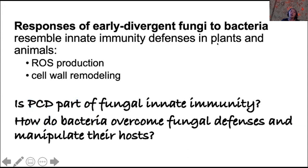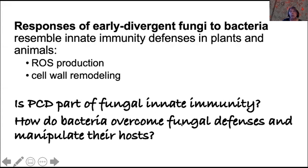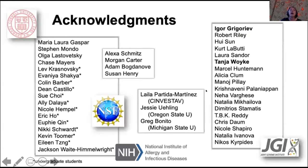In conclusion, we believe that early divergent fungi respond to bacteria in a way that resembles innate immunity defenses in plants and animals. In particular, early divergent fungi are capable of producing reactive oxygen species and cell wall remodeling when challenged by bacteria. We are interested in discovering whether programmed cell death is part of fungal innate immunity, and whether bacteria that are able to overcome fungal defenses and enter the cells manipulate their hosts and control their reproductive biology. With this, I would like to thank our collaborators and our sources of funding.